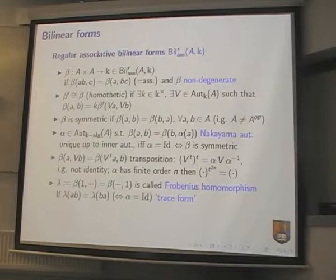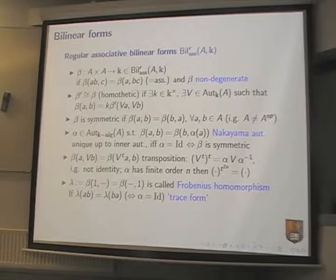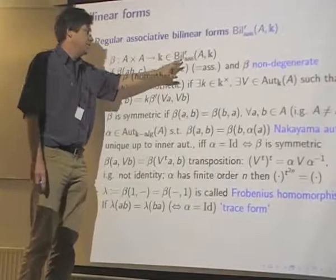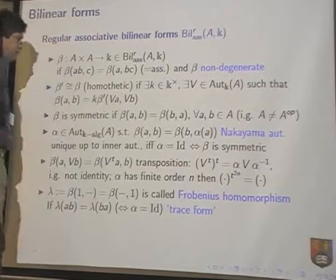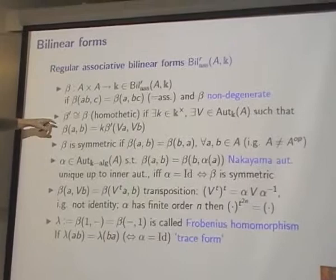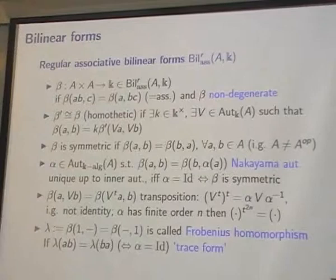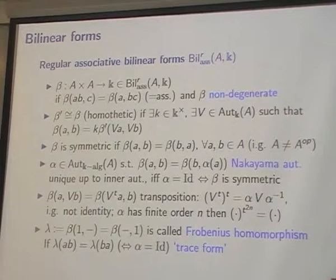To approach the Frobenius, we should look at bilinear forms as another way to construct dual elements. If you have a non-degenerate bilinear form on some space, say vector space or projective module, then under the condition, I will only look at regular associative bilinear forms. A bilinear form is associative if the bilinear form of a times b with c is the same as the bilinear form of a times bc, and I always assume it's non-degenerate here.